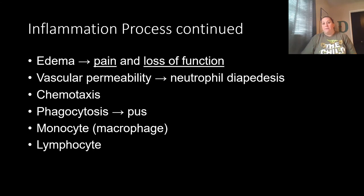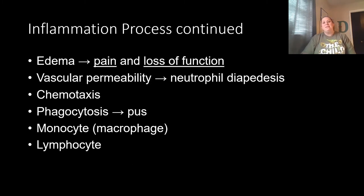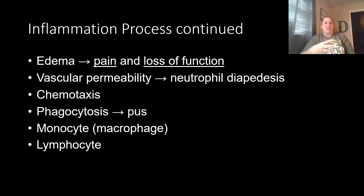This is where monocytes come in. Monocytes, when activated, become macrophages — huge cells compared to others, like the tanks. It takes a while for them to get to the area of injury, but once there they help clean things up, rebuild, and start the process of repair. If we cannot neutralize the invader through these processes, this is when lymphocytes become involved and the specific immune system comes into play, coming up with a more strategic defense. This is why it's a slower process — they have to identify the invader, come up with a plan, and then initiate it.